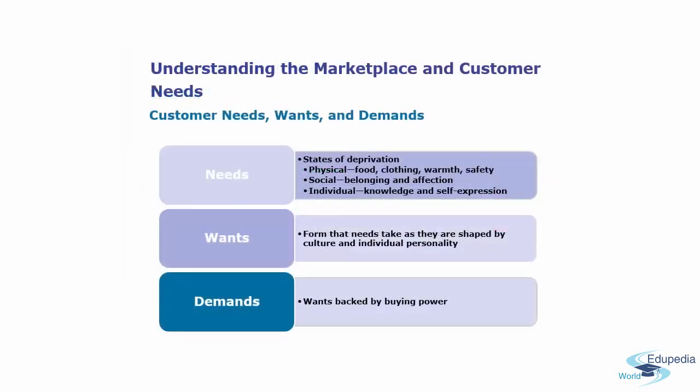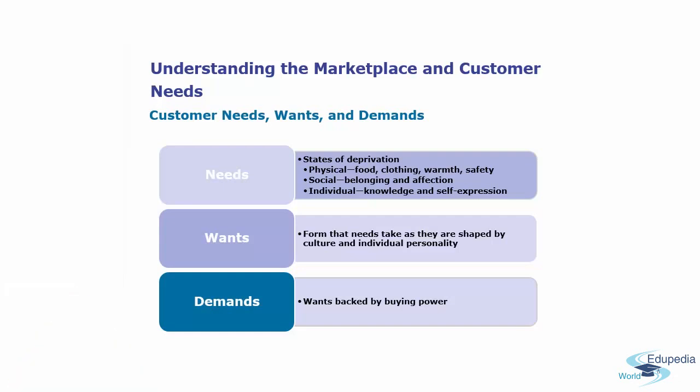Understanding customer needs, wants, and demands: needs are states of deprivation — physical needs like food, clothing, warmth, and safety; social needs like belonging and affection; and individual needs like knowledge and self-expression. This connects to Maslow's hierarchy of needs. Wants are the form needs take as shaped by culture and individual personality. Demands are wants backed by buying power.